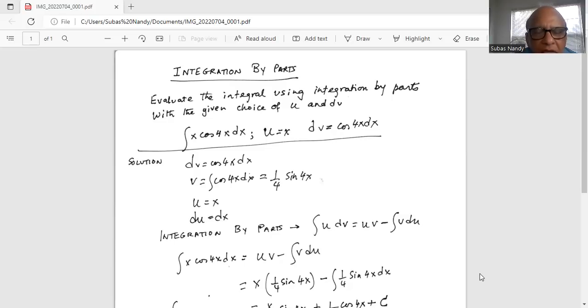Okay, so we have to integrate. It's an indefinite integral x cosine 4x dx given u is equal to x and dv is equal to cosine 4x dx.